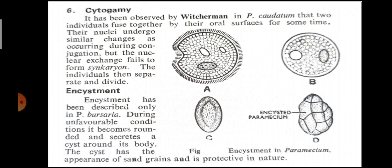इसी प्रकार एक और species है - Paramecium bursaria - इसके अंदर encystment describe किया गया है कि unfavorable conditions के दौरान Paramecium rounded हो जाते हैं and secrete a cyst around the body. The cyst has the appearance of sand grains and is protective in nature. ये encystment in Paramecium के चित्र हैं. So this is all about reproduction in Paramecium, जो आपने Part 1 और Part 2 में पढ़ा. दोनों lectures को ध्यान से पढ़ियेगा. Thank you very much.